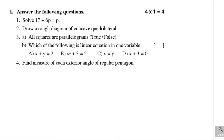Third problem: All squares are parallelograms — true or false? The definition of a parallelogram is a quadrilateral in which two pairs of opposite sides are parallel. In a square also, two pairs of opposite sides are parallel. So all squares are parallelograms. This is true.